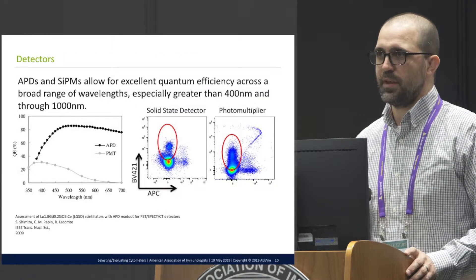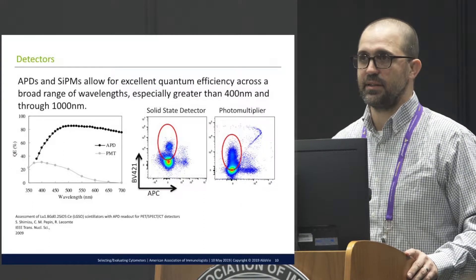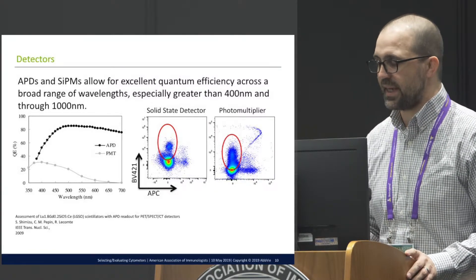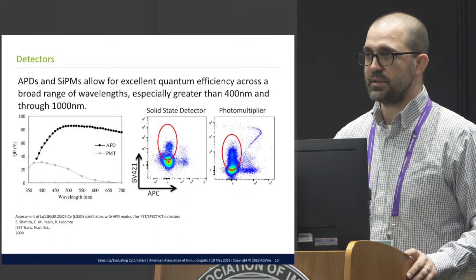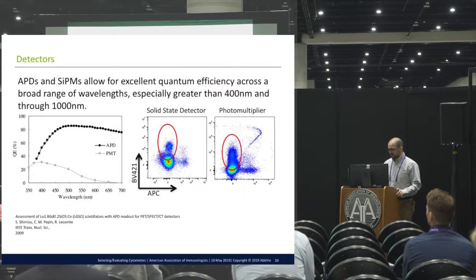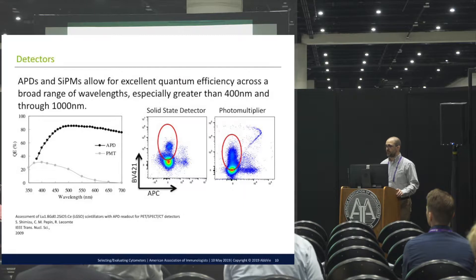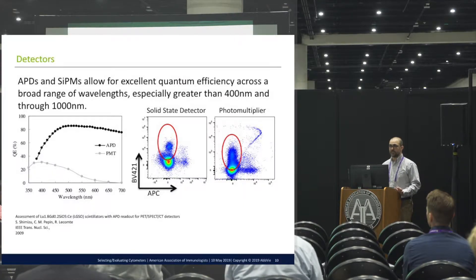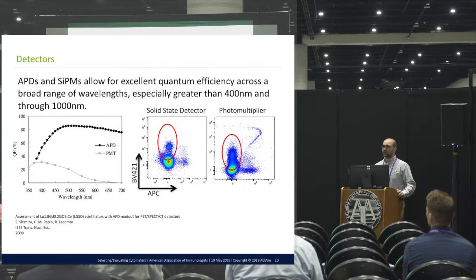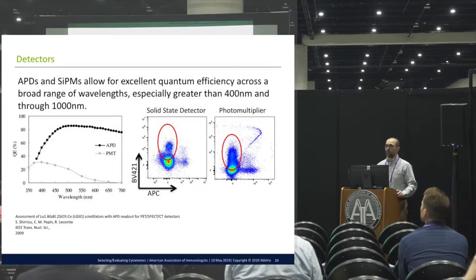In terms of detectors, one of the main advances many companies have made is using solid-state detectors, specifically avalanche photodiodes, or in the case of the Quantion, an array of diodes in a silicon-based photomultiplier. The result is basically the ability to have greater quantum efficiency over a wider range of wavelengths on your flow cytometer. Quantum efficiency measures how efficiently a detector converts incoming light photons into an electrical signal measurable by downstream electronics. Photomultiplier tubes perform pretty well in the higher-energy, lower-wavelength range.